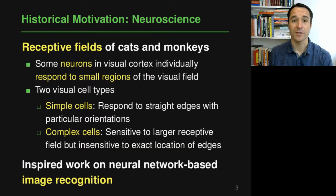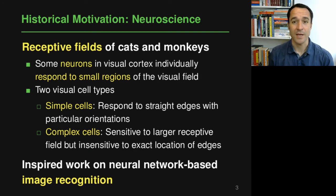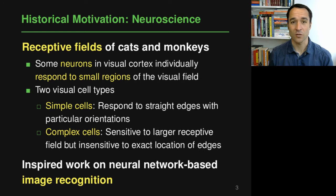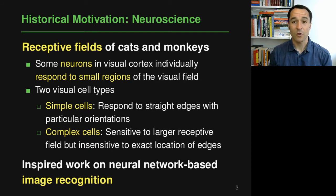Let's start with some historical background. The idea of convolutional neural networks has been biologically inspired. Specifically, the inspiration came from experiments done on animals to find out why and how animals see and how their brain processes what they can see. In these experiments, done with cats and monkeys, researchers found that some neurons in the visual cortex correspond to small regions of the visual field of what these animals are seeing.